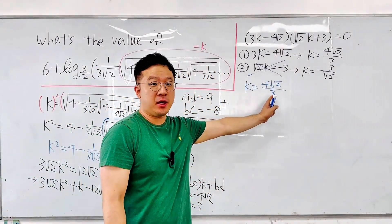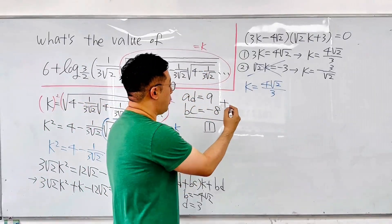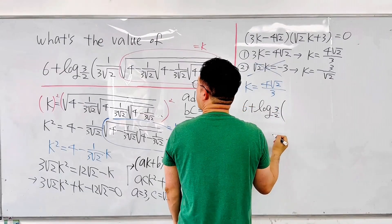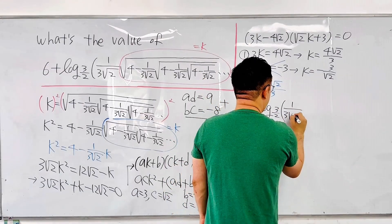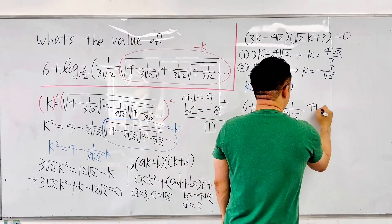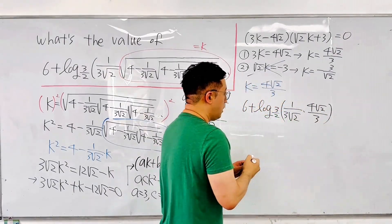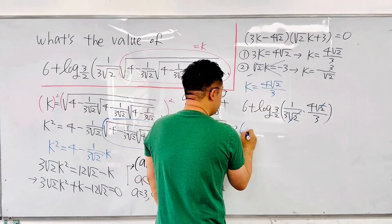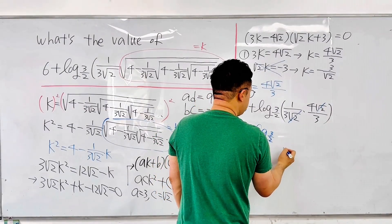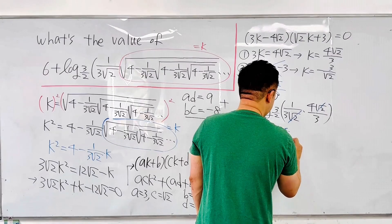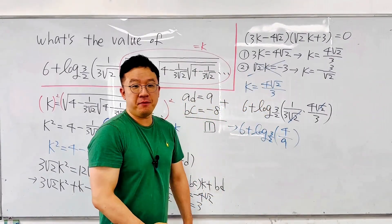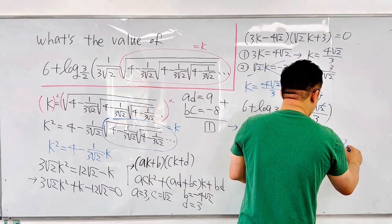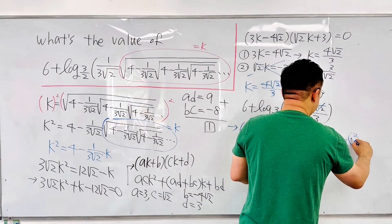Now that we have K, let's plug it back in. We're evaluating 6 + log base(3/2) of [1/(3√2) · K]. Substituting K = 4√2/3, the argument becomes 1/(3√2) · (4√2/3) = 4/9. Note that 4/9 = (2/3)², so the expression becomes 6 + log base(3/2) of (2/3)².